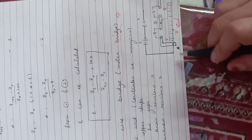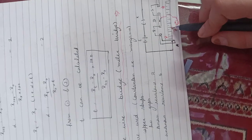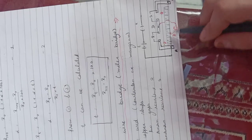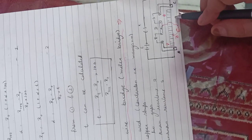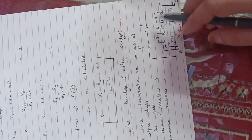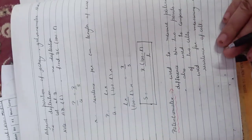For example, if the length L is 40 cm where the galvanometer shows zero deflection, then 40 upon 60 equals R upon S. From this, I can find the unknown resistance value.